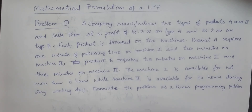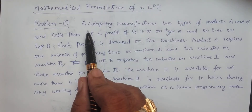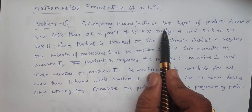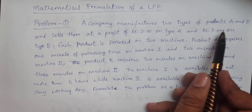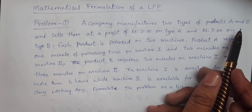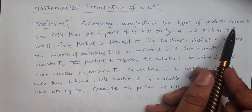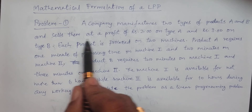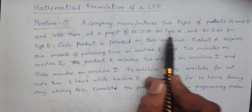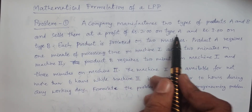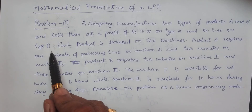How to formulate mathematically a linear programming problem — this is the problem. First, I read the problem. A company manufactures two types of products A and B, and sells them at a profit of 2 rupees on type A and 3 rupees on type B.